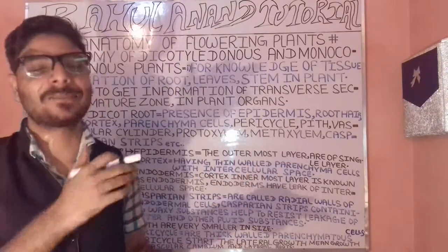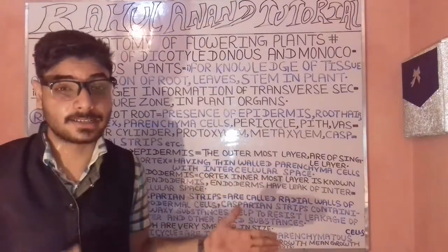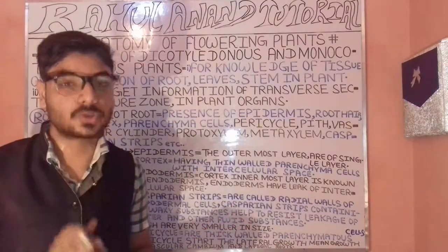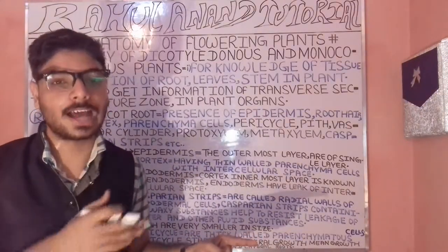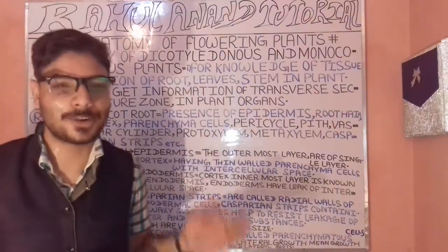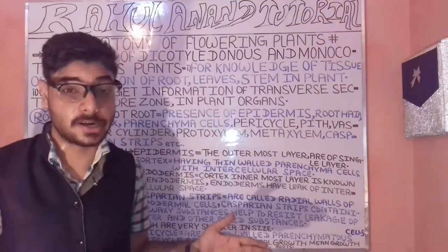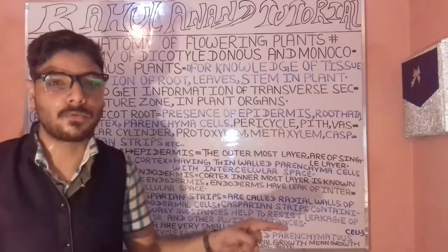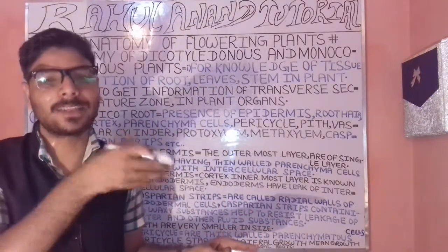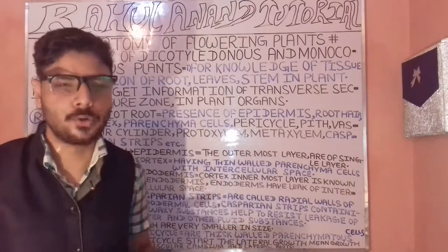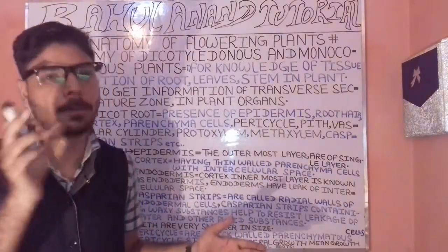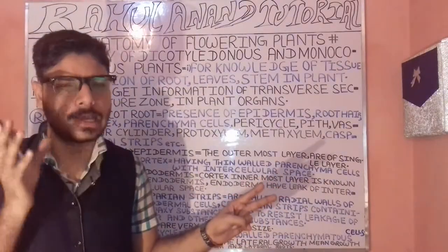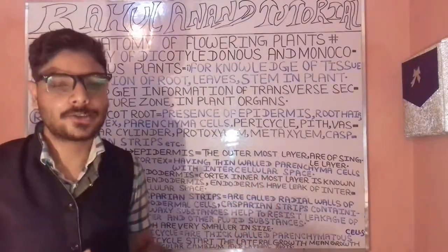In the case of xylem, there is a unidirectional flow of energy. The transportation of water and minerals takes place from the roots towards the aerial parts of the plant. Xylem is present within the vascular bundle.